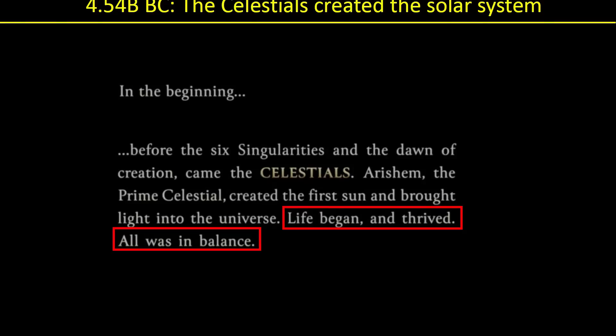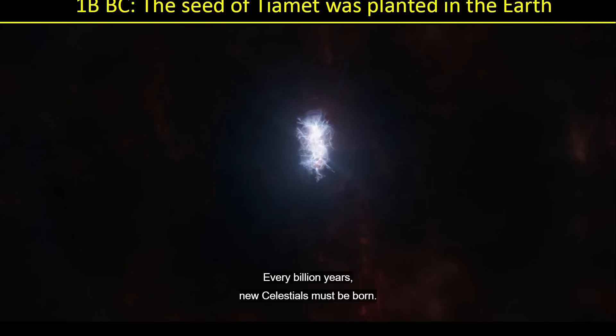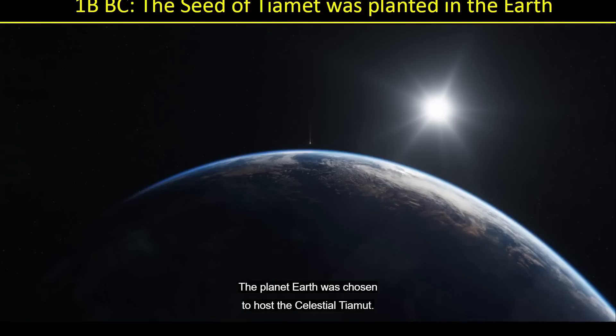Then we move forward to the creation of our solar system, which scientists say is 4.54 billion years ago. Life began and thrived; all was in balance. Then, I'm going to go with 1 billion BC for Tiamat being seeded, because Arishem explains every billion years, new Celestials must be born. The planet Earth was chosen to host the Celestial Tiamat. If it's every billion years, then presumably a billion years ago they planted the seed.